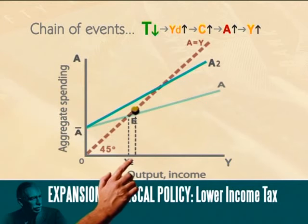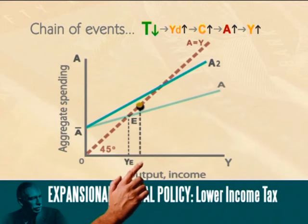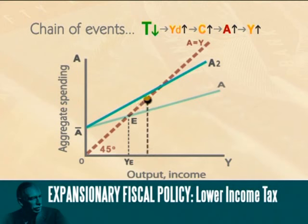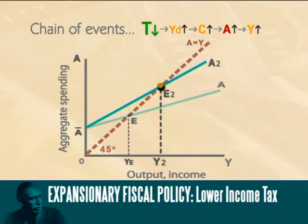Firms react by increasing production. This rise in output increases income, and households once again have more to spend. The multiplier is kicking in, and the market moves to the new equilibrium E2 and Y2. A movement closer to full employment takes place, and unemployment decreases.